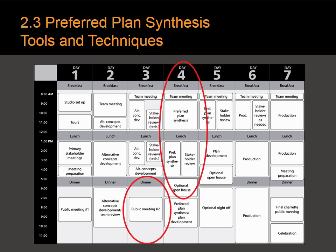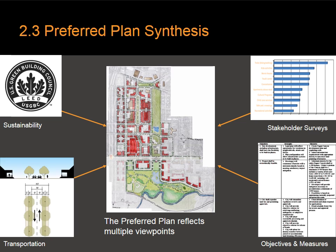Then it's on to preferred plan synthesis. This is where the team takes the information from the open house or public meeting and starts to synthesize a preferred plan. A preferred plan is influenced by sustainability, transportation, stakeholder surveys, the objectives and measures, and many more things. Basically, you take all the best ideas of the alternatives created so far and merge them into a single plan — that is the work of the Charette team.